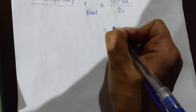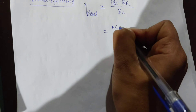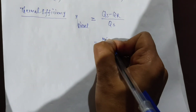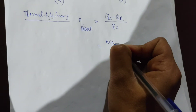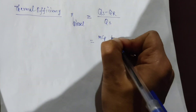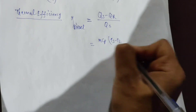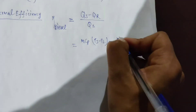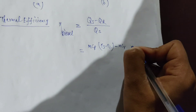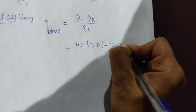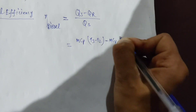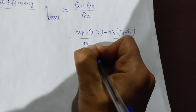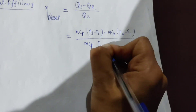Heat supplied is at constant pressure, so it equals m·Cp·(T3 − T2). Heat rejection is at constant volume, so heat rejected equals m·Cv·(T4 − T1). Therefore, thermal efficiency equals 1 minus m·Cv·(T4 − T1) divided by m·Cp·(T3 − T2).